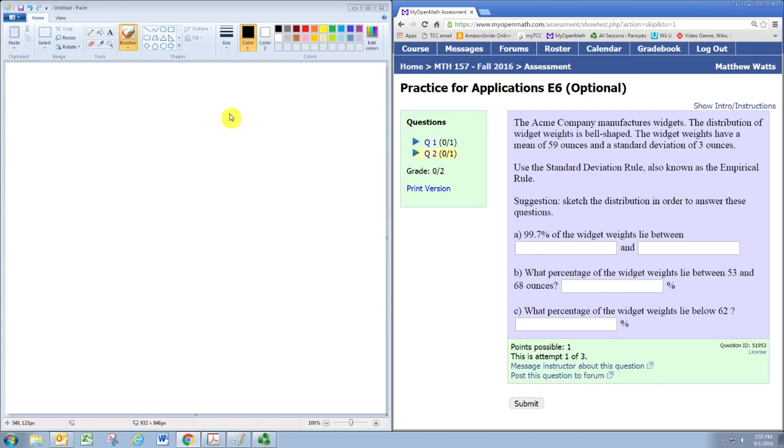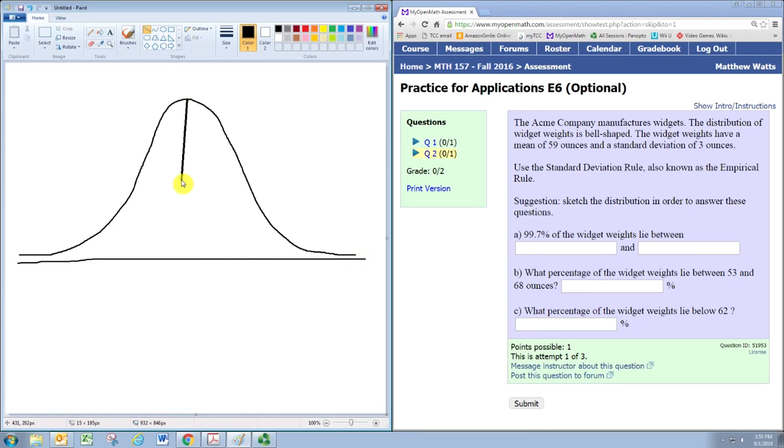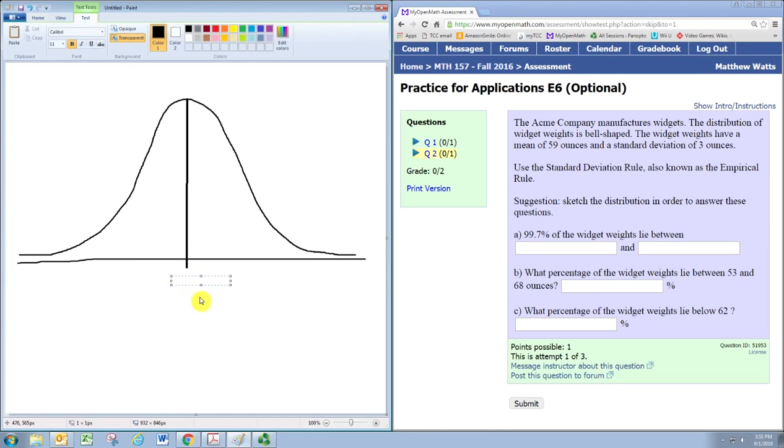Use the standard deviation rule, also known as the empirical rule. Suggestion: sketch the distribution in order to answer these questions. So we're going to sketch the distribution and we start by drawing a nice horizontal line and then drawing a bell curve over the top of that and then we'll put some vertical lines to divide this up. One of those vertical lines goes right down the middle and that actually marks off the mean which is given as 59.